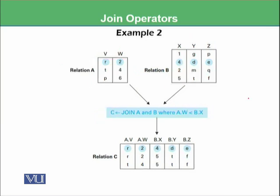Let's have another example where we change the condition. Now we are interested in where A.W is less than B.X. We pick the first value, 2. You can see that 2 is not less than 2, so this condition is false. For value 4, 4 less than 1 is not satisfied, but 4DE is okay. Then 2: 2 is not less than 2, but 2 less than 5 is okay, so this becomes the second line.